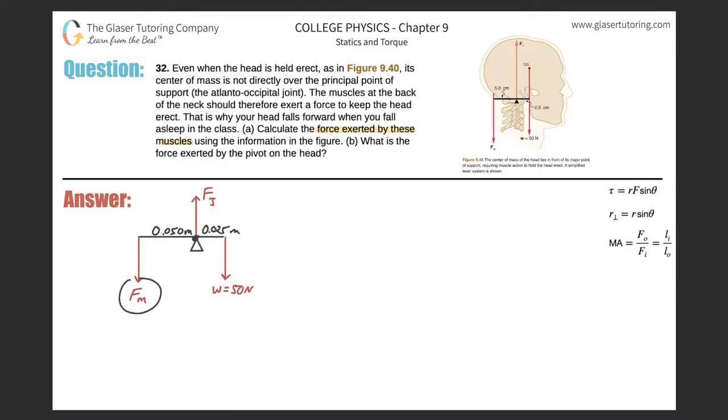Now, in order to find the force that the muscles are producing, remember this force will counteract the weight force, and more specifically, the torque I should say, that this force produces will counteract the torque that this weight produces. Now the head is going to be held stationary, and therefore the sum of the torques in this problem will equal zero.